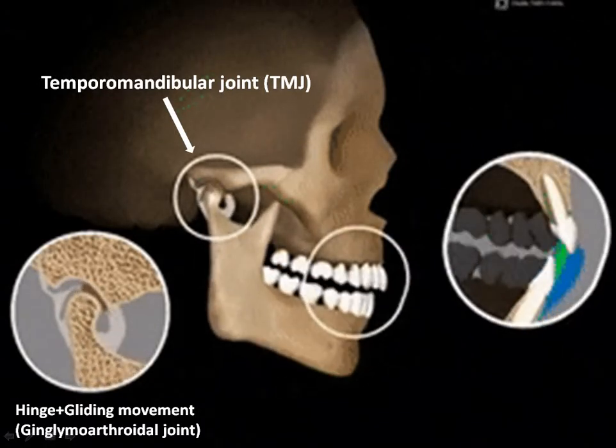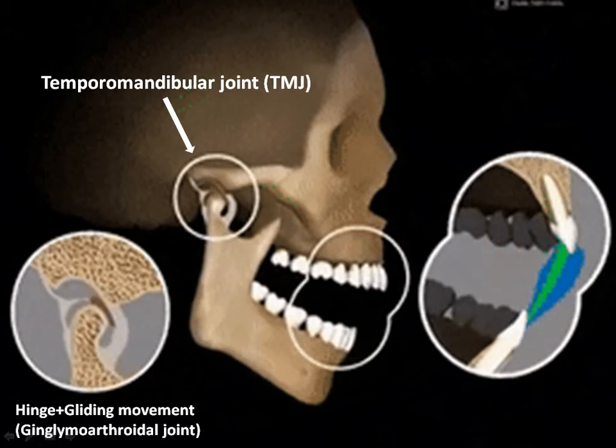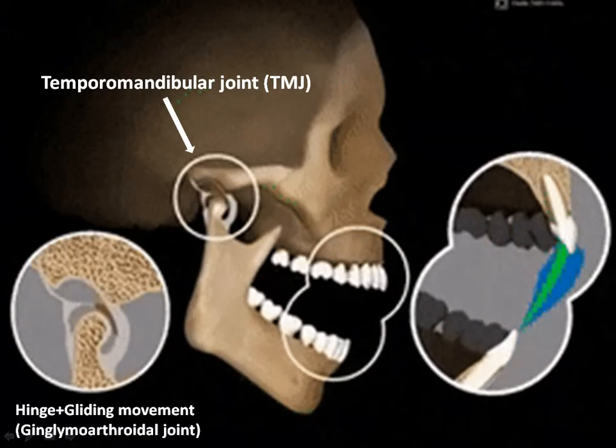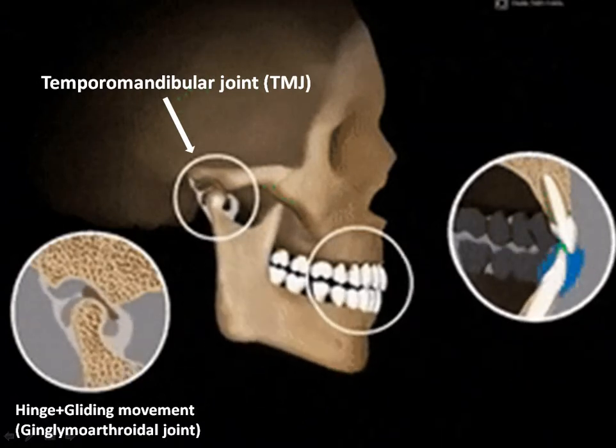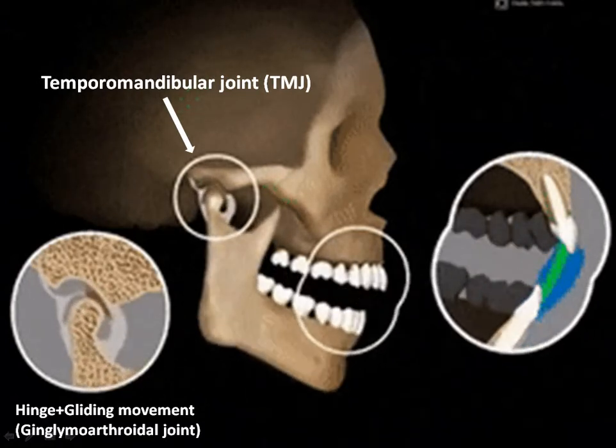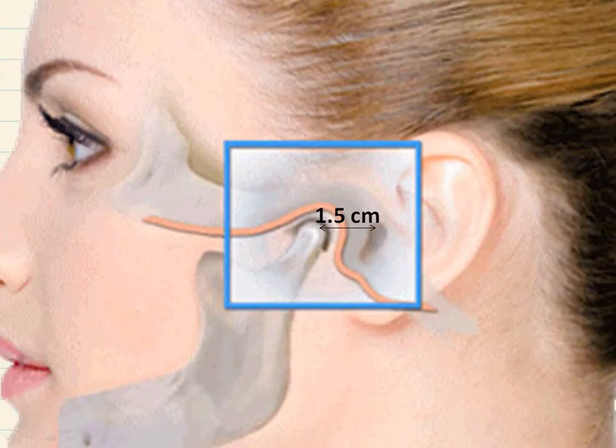For examination of TMJ we should first know a few things. The TMJ is located about 1.5 cm anterior to the tragus of the ear.